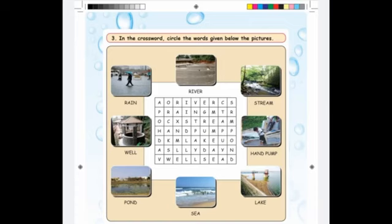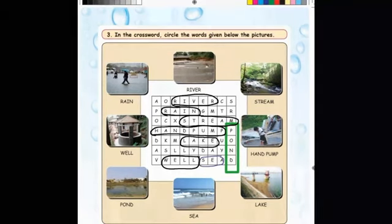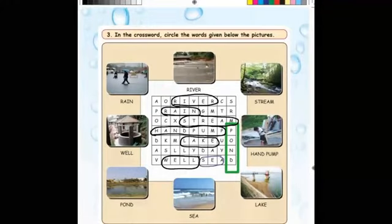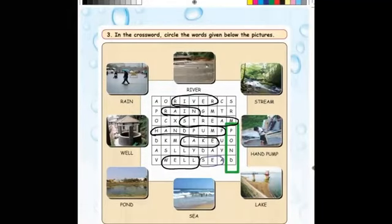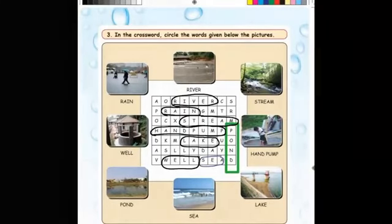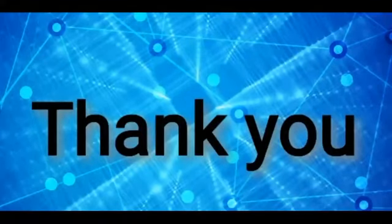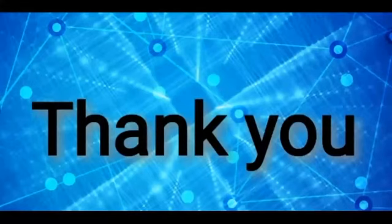Roman letter 2. In the crossword, circle the words given below the pictures. Answer is: river, rain, stream, hand pump, lake, well, sea and pond. Today is your homework: read and write, filling the blanks and in the crossword, circle the words given below the pictures one time. I hope you understood about this unit clearly. Meet you in the next unit. Happy learning. Bye.